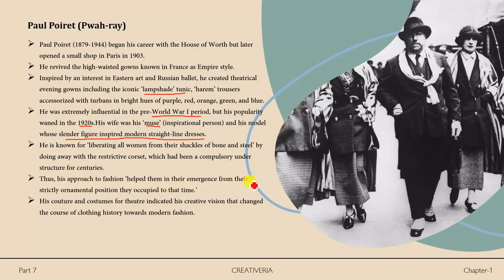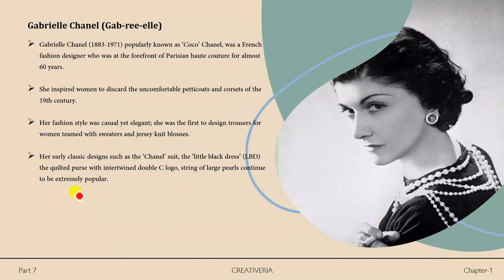Poiret helped women emerge from their strictly ornamental position. His couture and costumes for theater indicated his creative vision that changed the course of clothing history towards modern fashion. Next is Gabrielle Chanel, popularly known as Coco Chanel — a French fashion designer who was at the forefront of Parisian haute couture for almost 60 years.